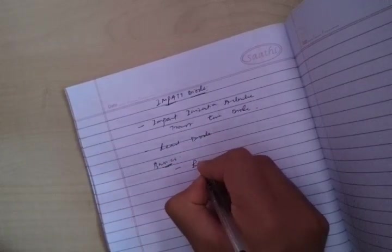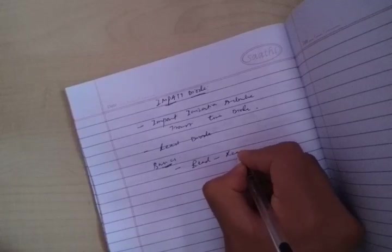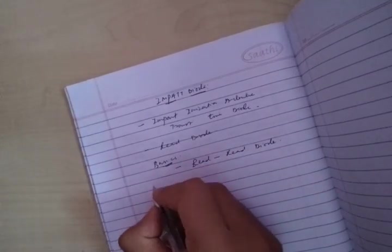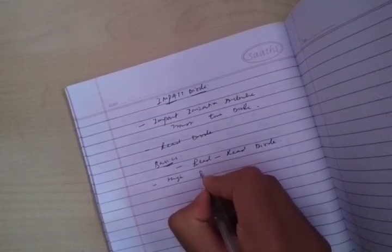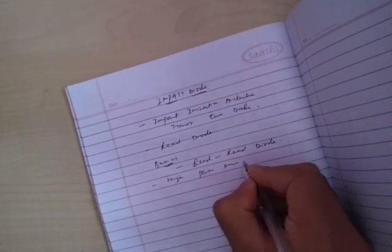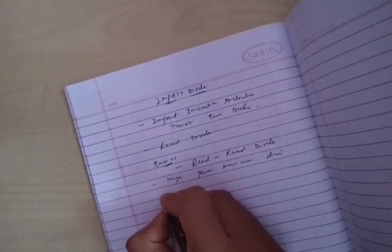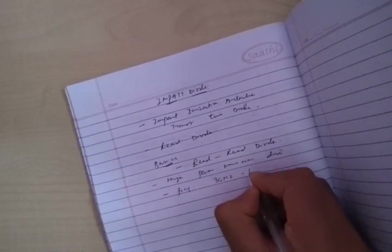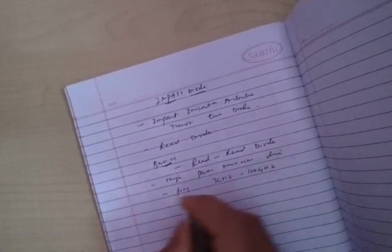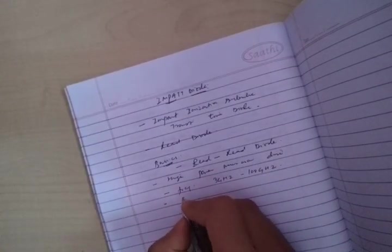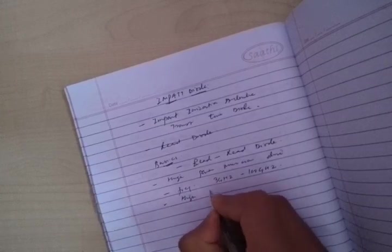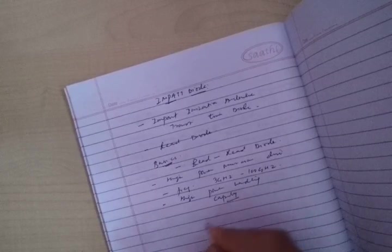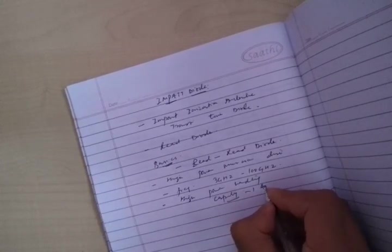It was originally proposed by Read, that's why it's also known as a Read diode. It is a high power microwave device with frequency range from 3 gigahertz to 100 gigahertz. It has high power handling capacity, which is the main advantage of the IMPATT diode.